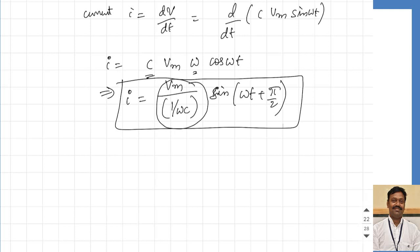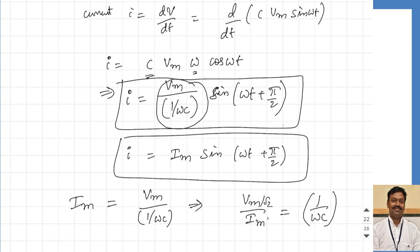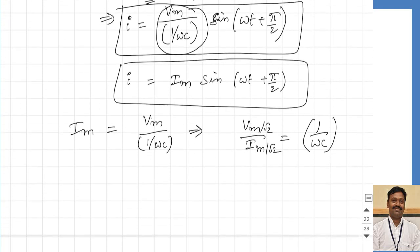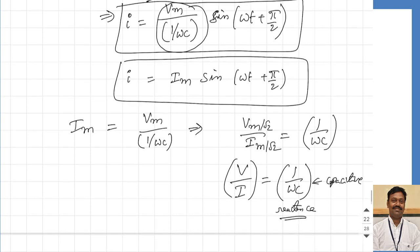This term I can take as the current maximum, so I can write I equals I maximum sine of omega t plus 90 degrees. The value of I maximum is nothing but V maximum divided by 1/ωC. From this, V maximum divided by I maximum equals 1/ωC. Dividing both numerator and denominator by root 2, V maximum by root 2 is the RMS voltage V, and I maximum by root 2 is the RMS current I, so the ratio V/I equals 1/ωC. This ratio of voltage to current gives the resistance-like quantity called capacitive reactance, denoted Xc. So 1/ωC is called the capacitive reactance of the capacitor.